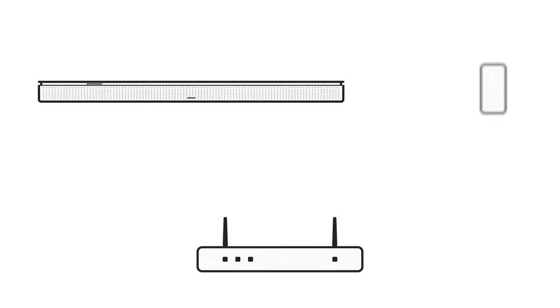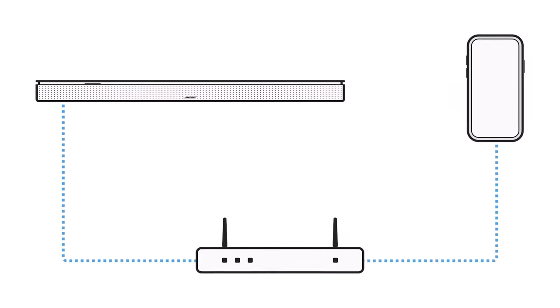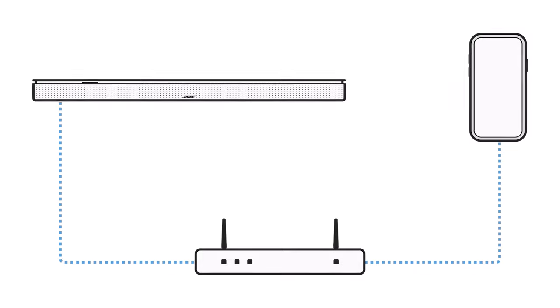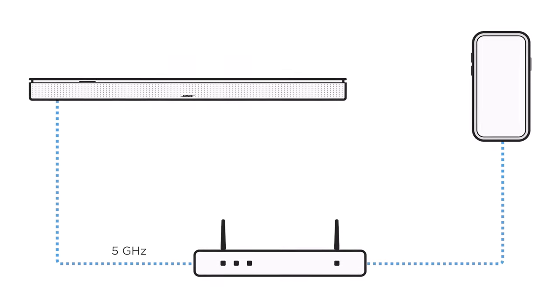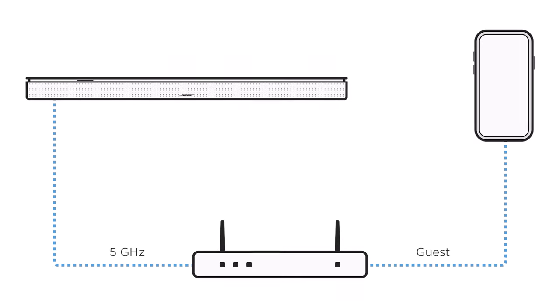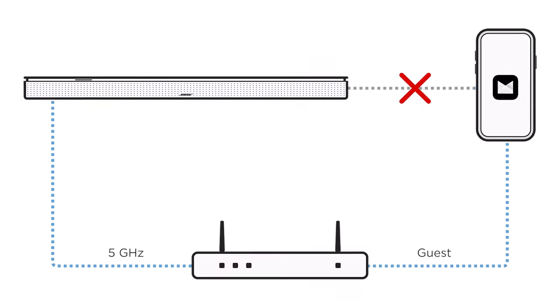Next, be sure your soundbar and mobile device are on the same network. For example, if your soundbar is on your main network but your mobile device is on your guest network, the app won't find your soundbar.